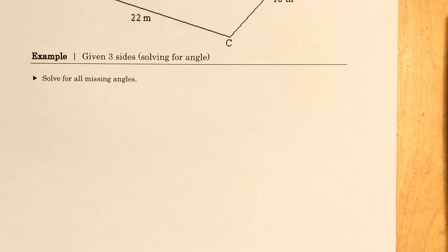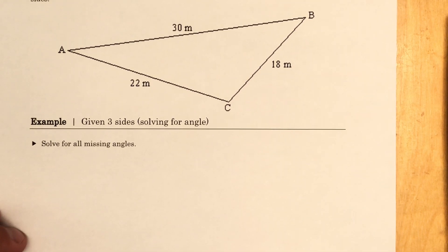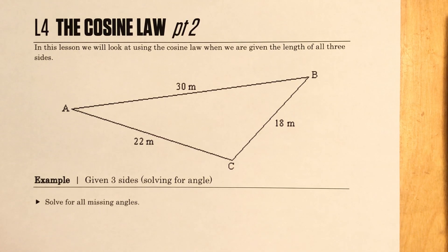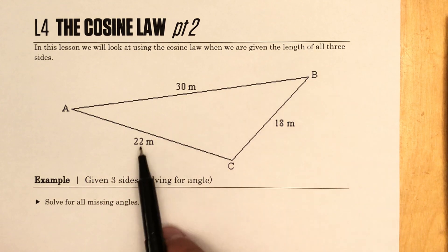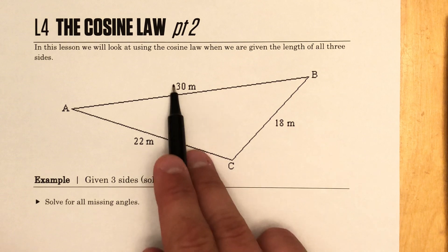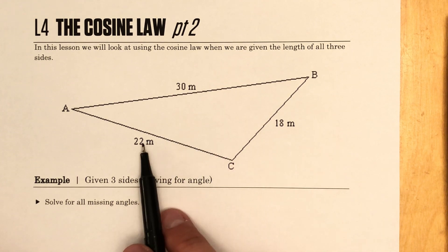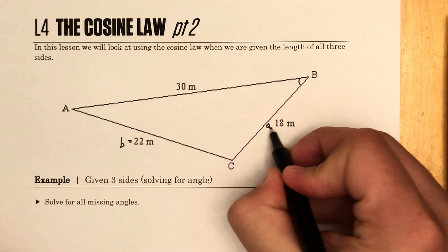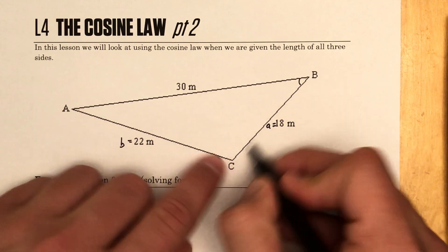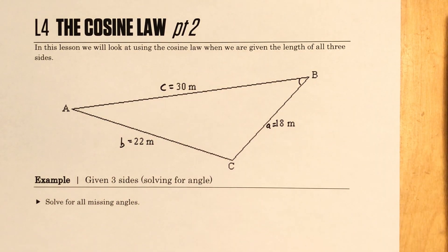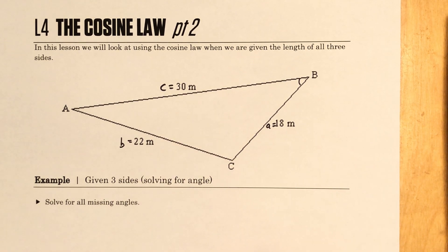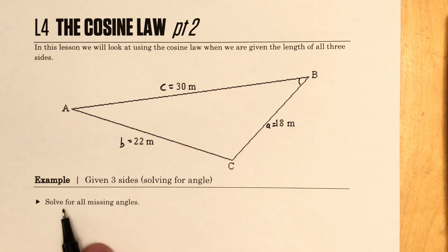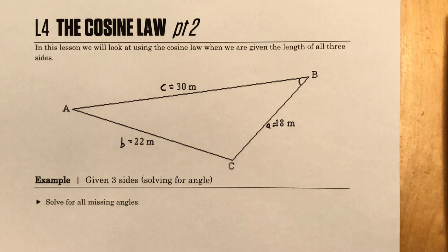Next we're going to solve for an unknown angle. Here we're given three side lengths — again three known values, but this time it's all sides. We don't have a single angle-side pair. Side B, side A, and side C are all known but none of the angles are known. Because we have three pieces of information, we will be able to use the cosine law.